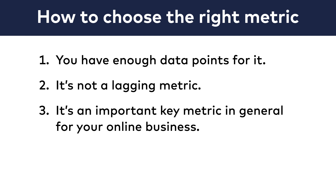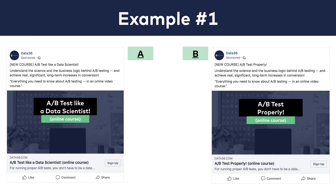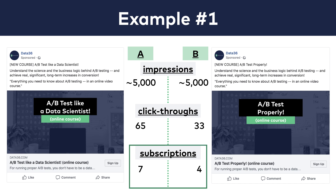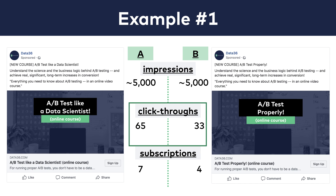Now in some cases, you can't fulfill all three conditions and you will have to compromise. Let me show you two examples. When I A-B tested the name of this course, I ran Facebook ads. This was only a small initial naming A-B test, so I worked with a smaller budget. I got around 10,000 impressions and 98 click-throughs to my ad. Eventually, 11 people subscribed to the waiting list of the course. My real success metric — that would have fulfilled all three conditions — would have been the waitlist subscriptions. But I knew I would have so few subscriptions that I would never have enough data points. So I went with click-throughs instead. Version A, 'A-B test like a data scientist,' got around two times more click-throughs than version B, 'A-B test properly.' That's a 99.9% statistical significance rate, so I could conclude this test.